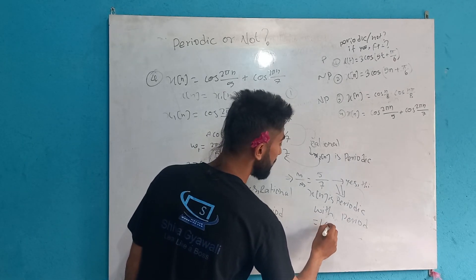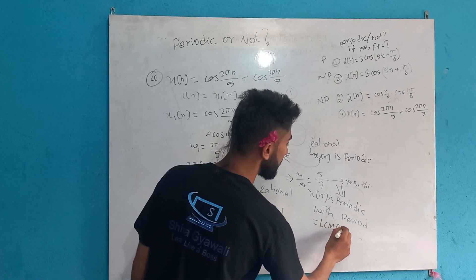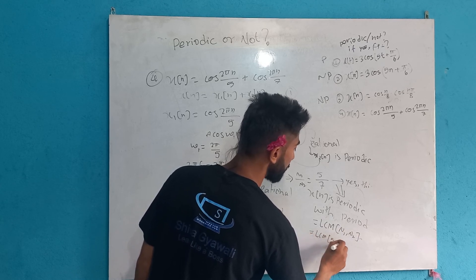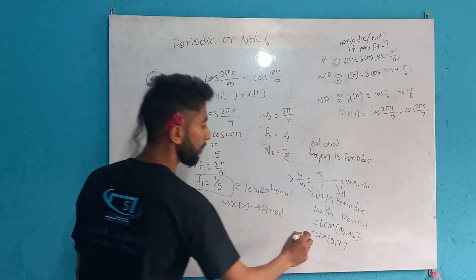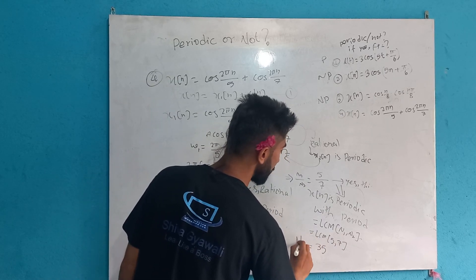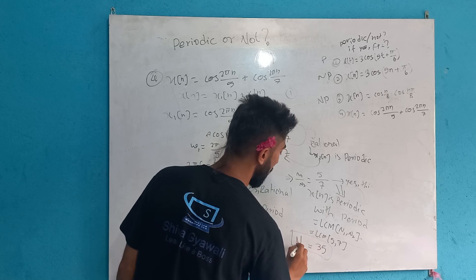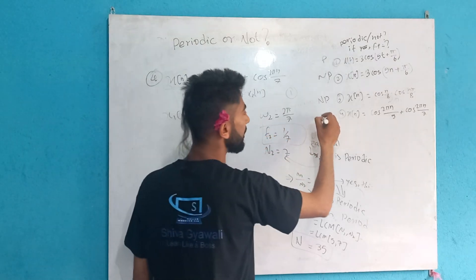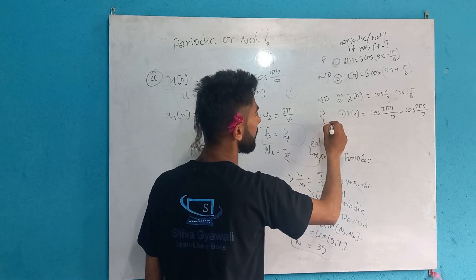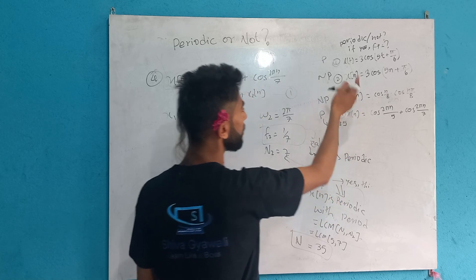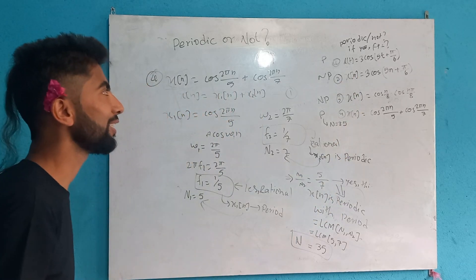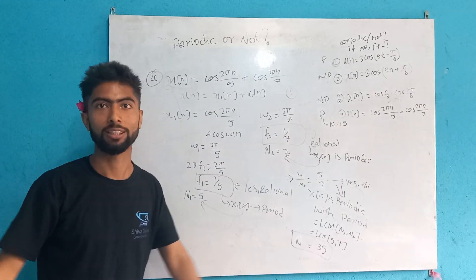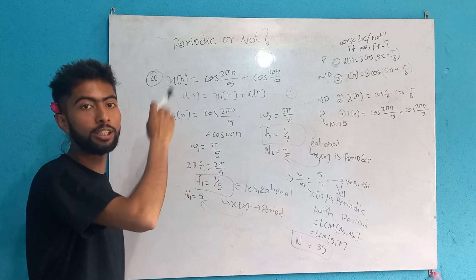The overall period of x[n] = x1[n] + x2[n] is the LCM of the individual periods: LCM(5, 7) = 35. Therefore x[n] is periodic with period N = 35. Both components are periodic so their sum is also periodic.